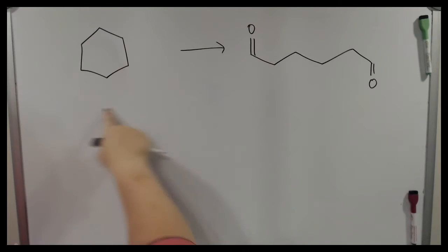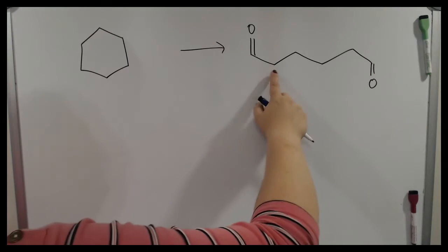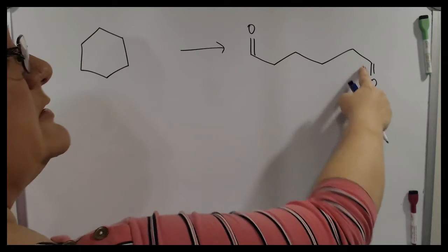So here we have a six-membered ring, and in the product you get one, two, three, four, five, six carbons.